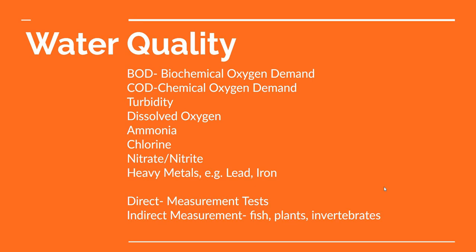What do we mean exactly by water quality? There are lots of measurements we can take: turbidity — that is how clear it is — the amount of oxygen, ammonia, chlorine, and nitrite. If you have a fish tank at home, you're probably familiar with many of these. There are direct tests you can do to measure them, and also indirect — we can just see how things are growing.